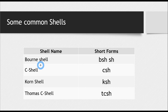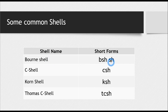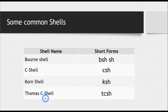Now let's see the short forms of these shells. The short form for Bourne shell is BSH or SH. Bourne shell is so common and basic that if we just write SH, that means we are referring to Bourne shell. The short form of C shell is CSH, the short form of Korn shell is KSH, and the short form of TC shell is TCSH. You should remember these short forms — they will come in very handy.